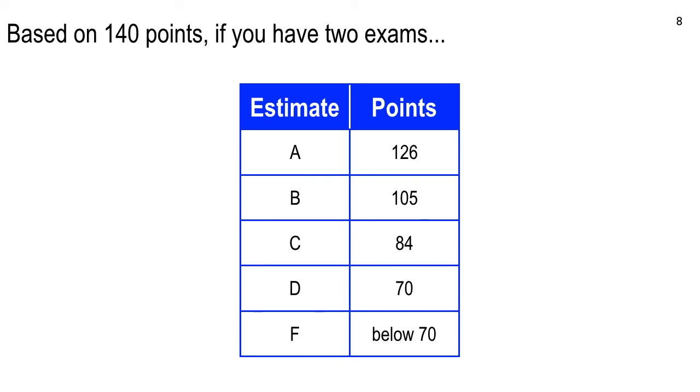The baseline point value is 140. That means the maximum regular points—not including bonus points. So right now, we've got 140 points on the books. That means if I were going to give letter grades today, I would give an A to students that have 126 points or more, 90% of 140. B would be 105 or more. C would be 84 points or more. D is 70 points, 50% of the possible points. And F is below that.